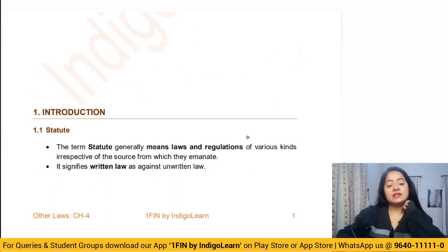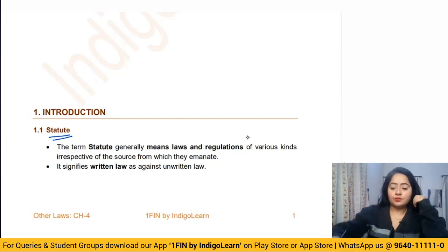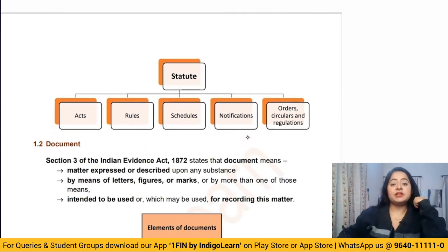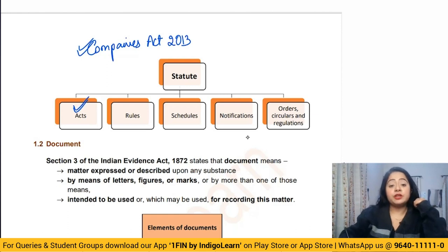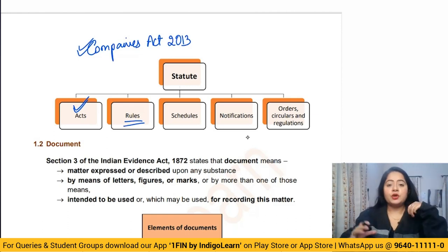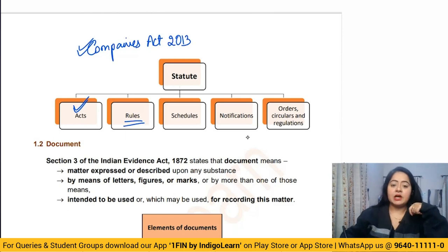First of all, what is a statute? Statute basically means written law. Parliament creates different types of laws — for example, the Companies Act 2013. That act contains many provisions. Along with that act, we also have to read the parallel rules. Rules basically contain the procedures to follow whatever laws are stated in the act.